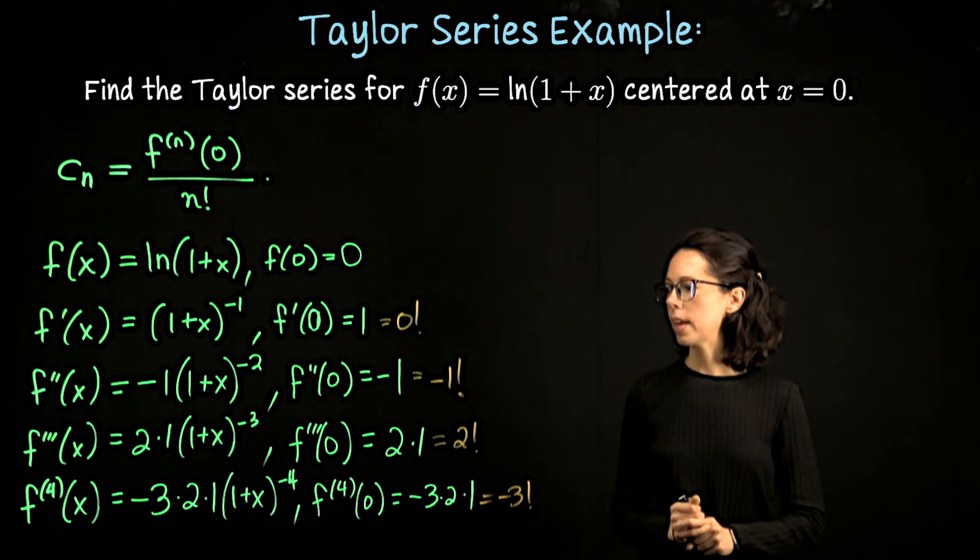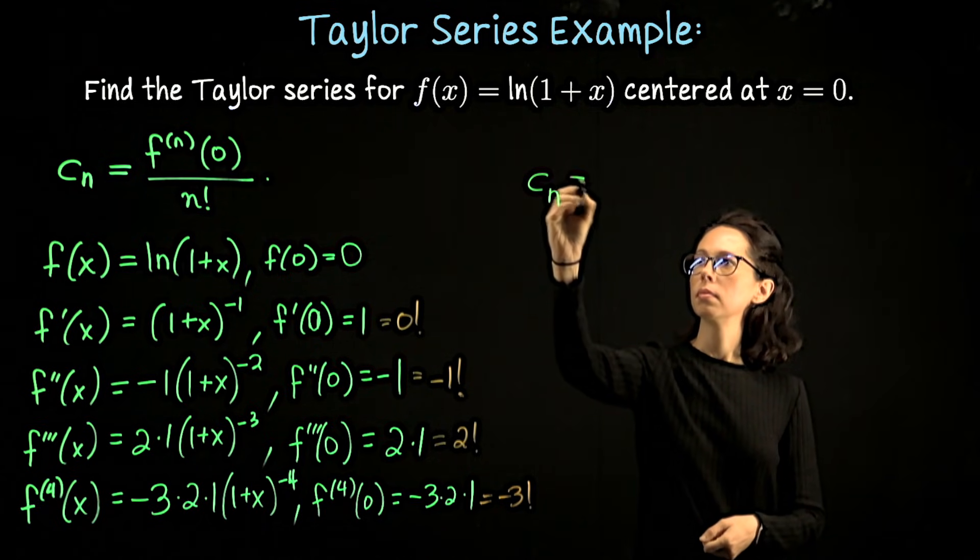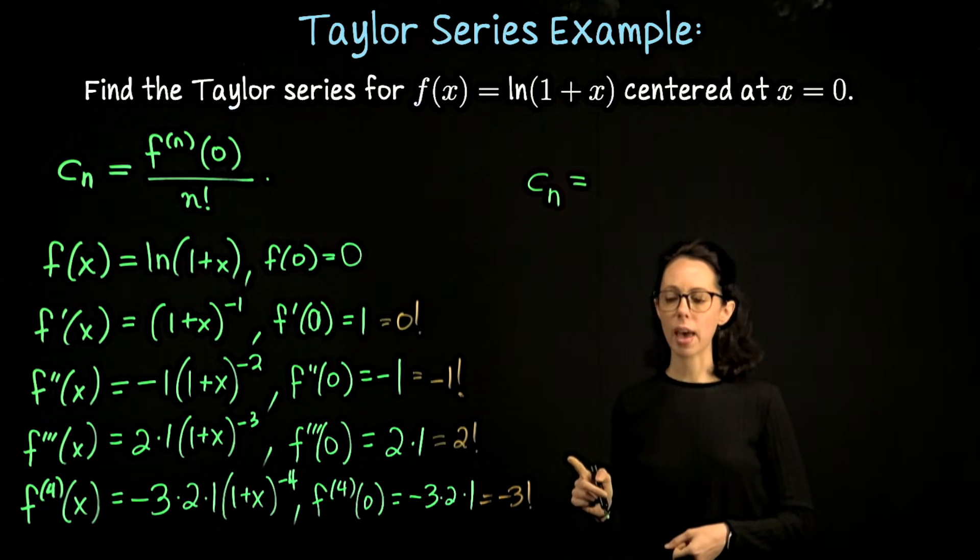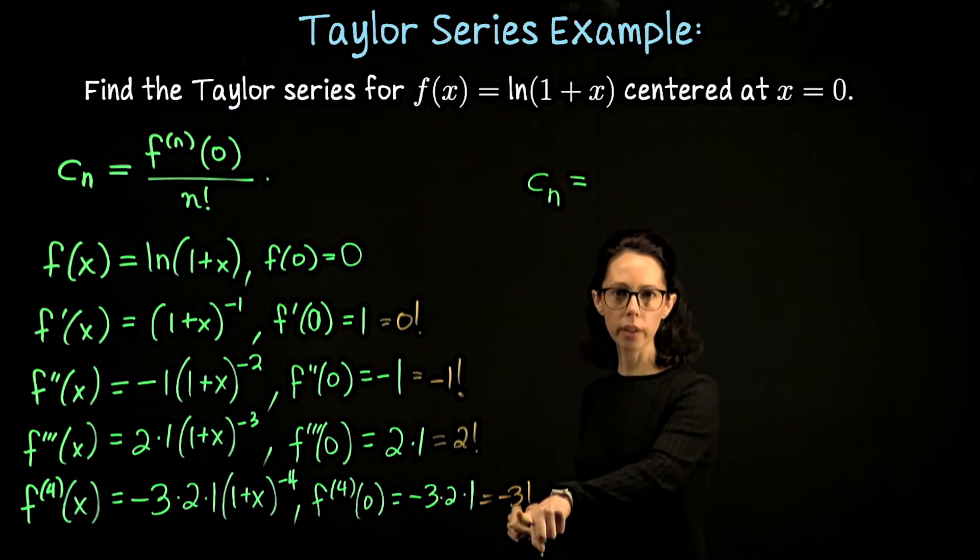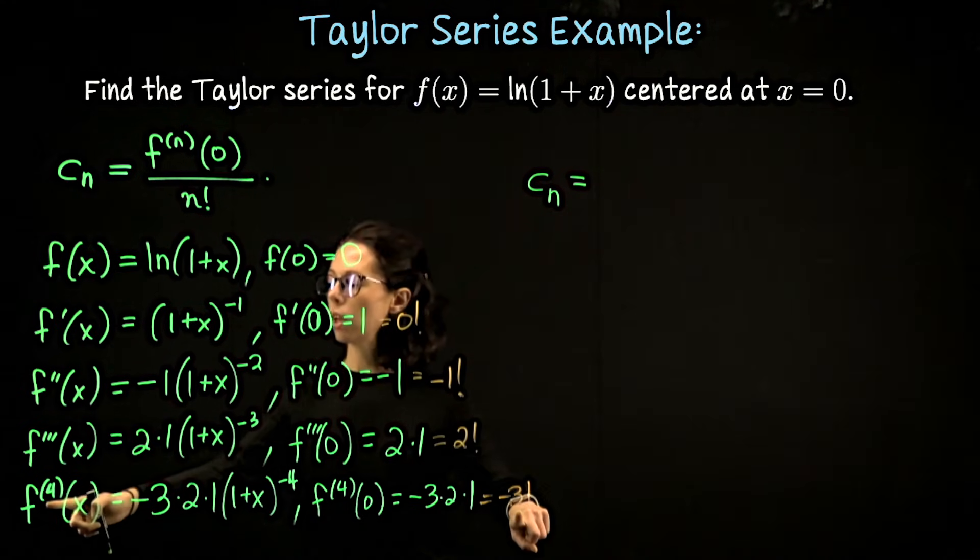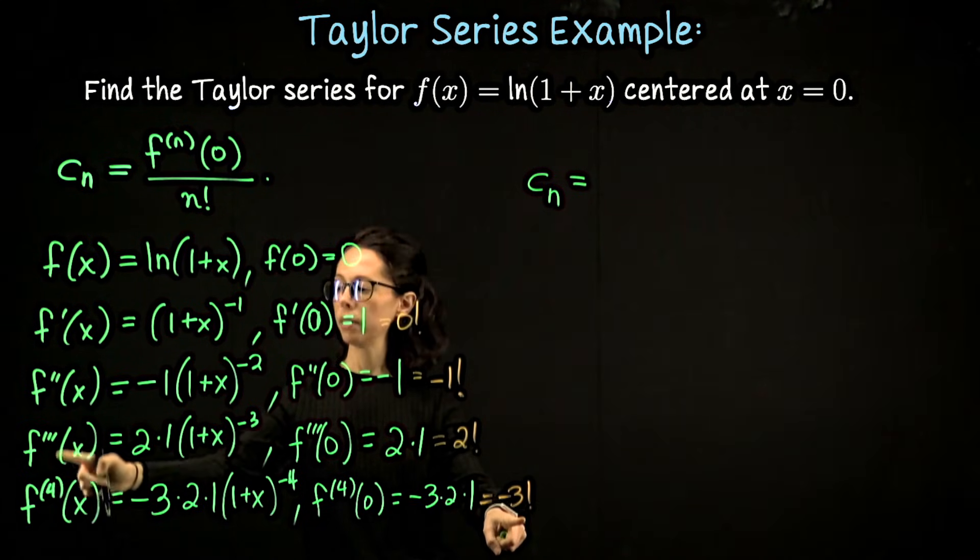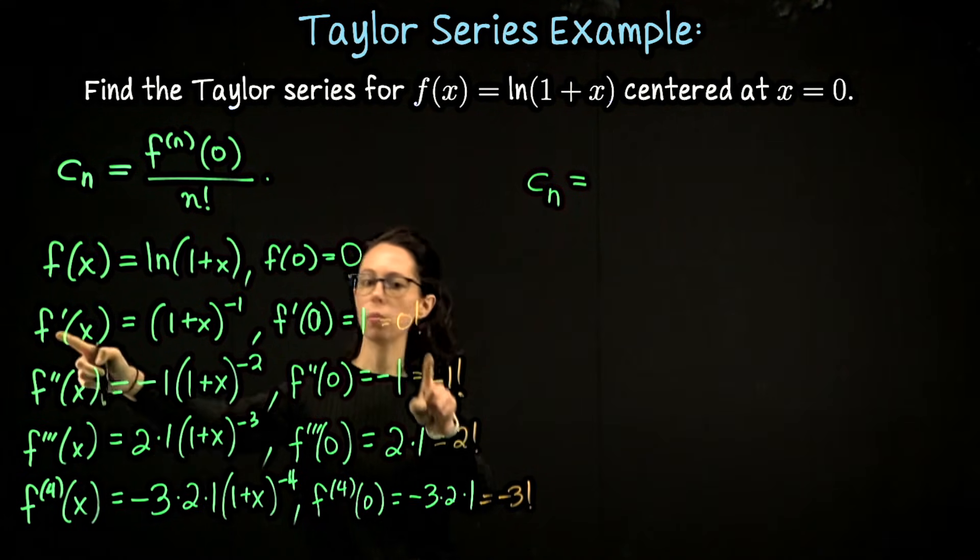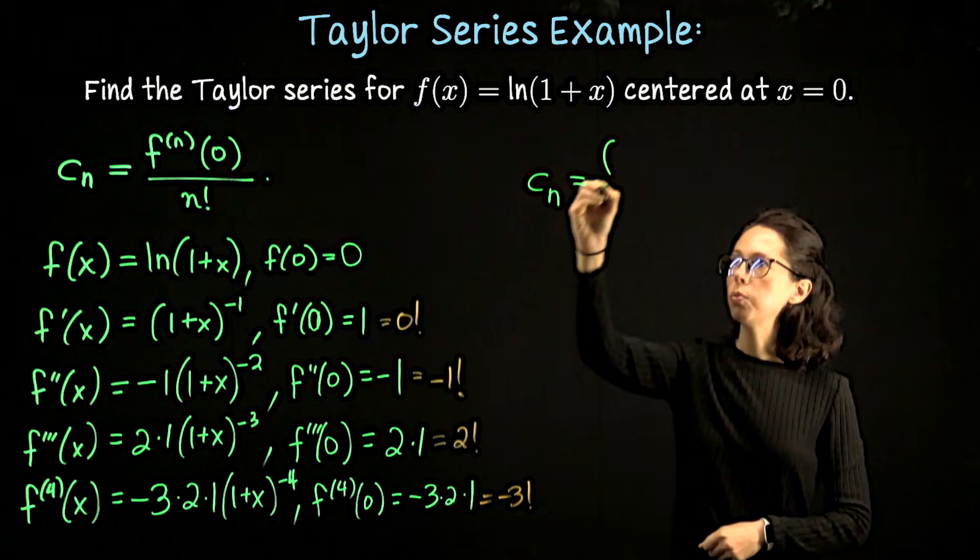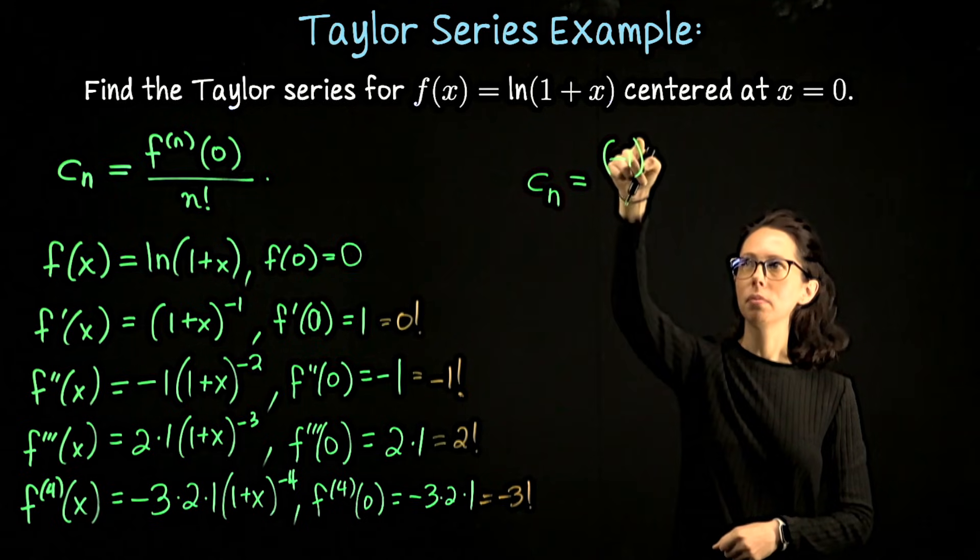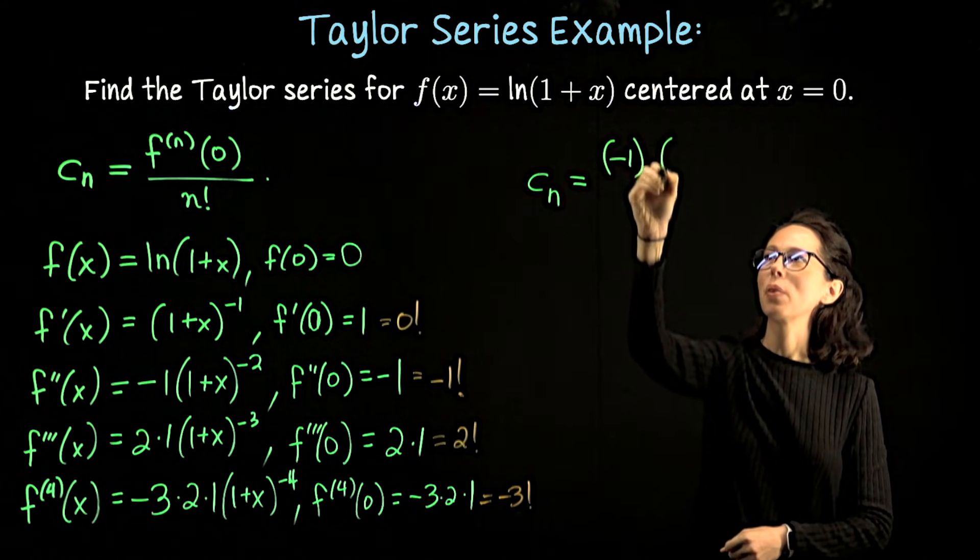So let's set up our Taylor coefficient. c sub n is going to be the nth derivative of f evaluated at 0. Following the pattern here, the factorial expression we have is 1 lower than the level of derivative that we took. So from 4 to 3, from 3 to 2, from 2 to 1, 1 to 0. So we should write negative 1 to the... I'll say that in a second. I just want to stick with my factorial expression while I have it: (n - 1) factorial.